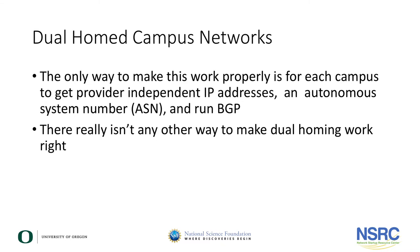If a campus is dual homed, the only way to make this work properly is to run BGP. And as discussed in other video clips, to run BGP, the campus must have a provider independent address block, an autonomous system number, and have the technical expertise and equipment capable of running BGP. Note that to obtain provider independent IP addresses and autonomous system numbers, the campus must join the appropriate internet registry and apply for and pay for these IP resources.